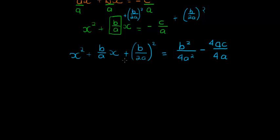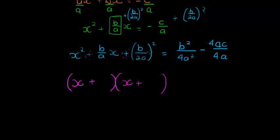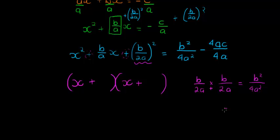Now this factors into two brackets. Since we have a plus sign, the signs in each bracket are the same — both plus. What times what gives me b over 2a? Well, b over 2a times b over 2a gives b squared over 4a squared. And b over 2a plus b over 2a equals 2b over 2a, which is just b over a — that gives me the middle term.